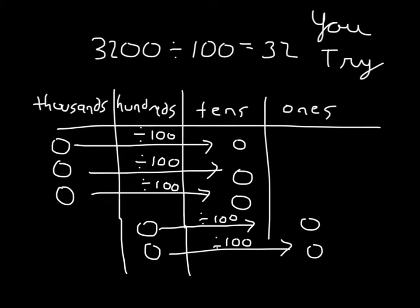If you didn't draw it the same way, that's understandable, because that's not how I had showed it to you originally. Thirty-two hundreds divided by 100 is 32 — that's 3,200 divided by 100 is 32.